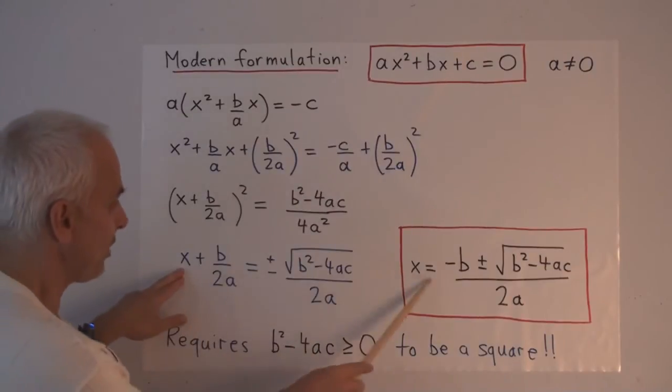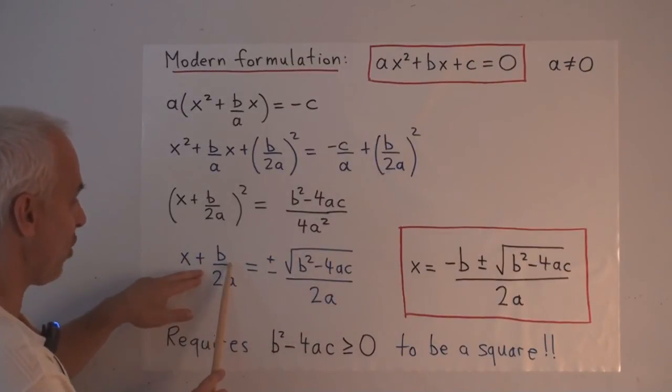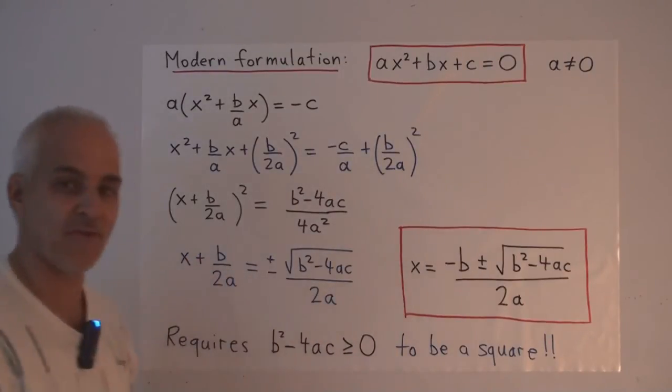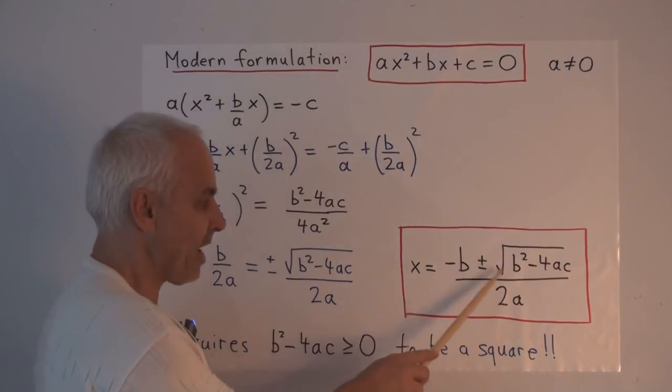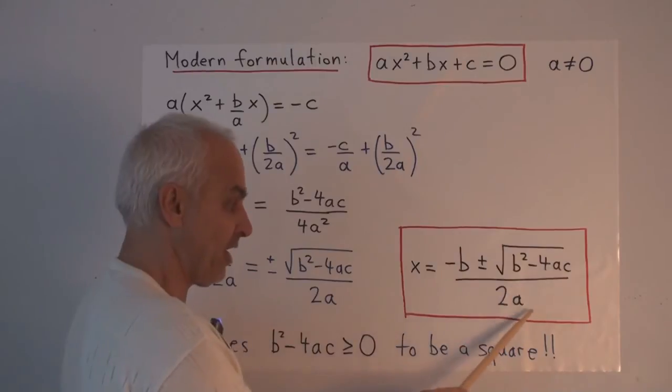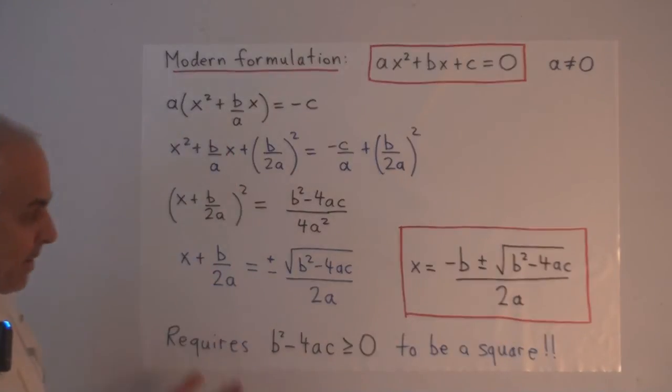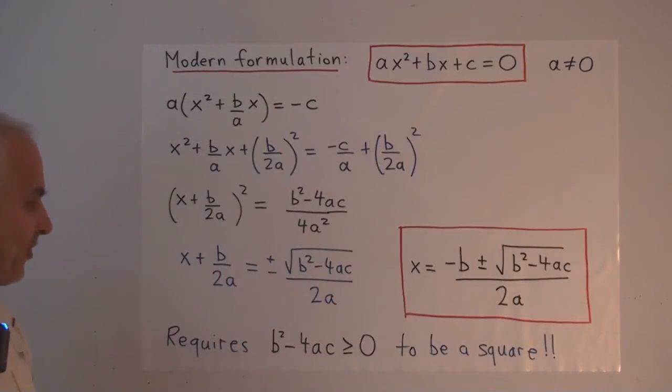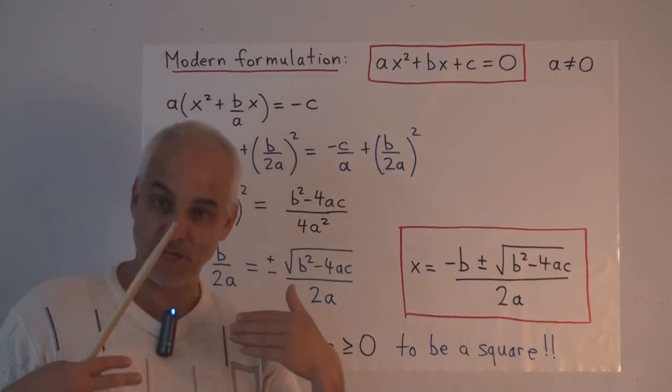And then to go from here to here is simply a question of taking this b over 2a and bringing it to the other side. So finally, x equals minus b plus or minus square root of b squared minus 4ac, all over 2a—a well-known formula for all students. And in our context, we can see, we can actually use this as long as long as this condition is satisfied.